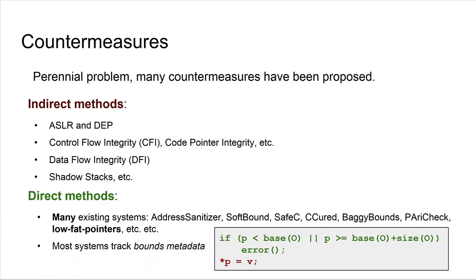This talk is about direct methods — we're directly trying to detect the memory error, otherwise known as bounds checking. There are many bounds checking systems out there. Address Sanitizer is a very prominent example; there's also SoftBound, which is quite famous, Baggy Bounds, and low-fat pointers too. Most of these systems work by tracking bounds metadata: for every object they record the object's size and base, and then whenever there's a memory operation, they instrument that operation with a check to see if the pointer is within the correct bounds.